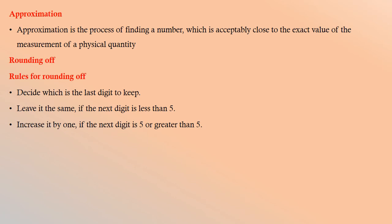Approximation: Approximation is the process of finding a number which is acceptably close to the exact value of measurement of a physical quantity. Rounding off - rules for rounding off: Decide which is the last digit to keep. Leave it the same if the next digit is less than 5. Increase it by 1 if the next digit is 5 or greater than 5.